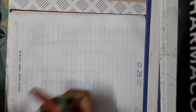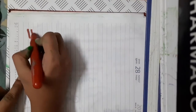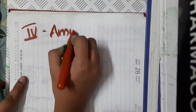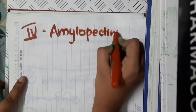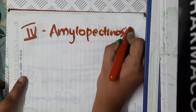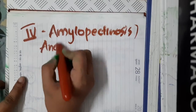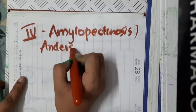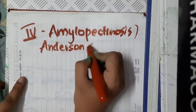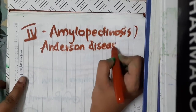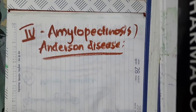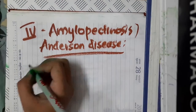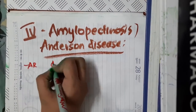Hello friends. Let us now learn about the type 4 glycogen storage disorder, which is called amylopectinosis or Anderson disease. This amylopectinosis or Anderson disease is an autosomal recessive disorder.